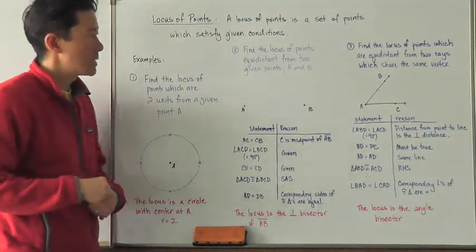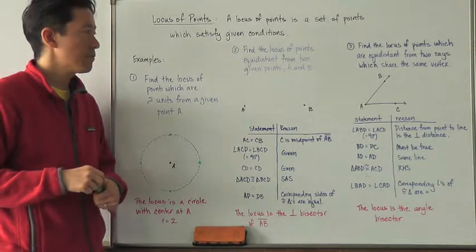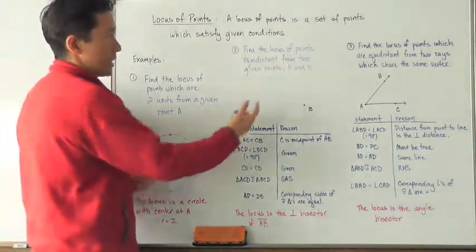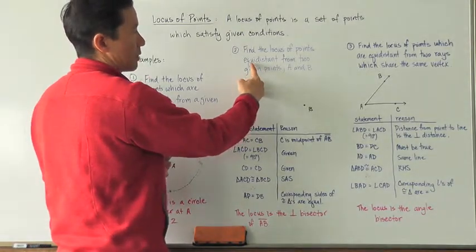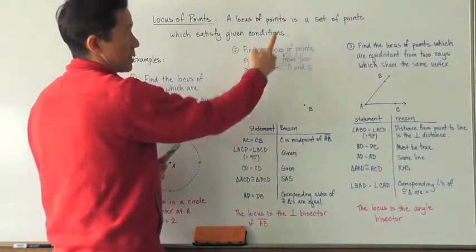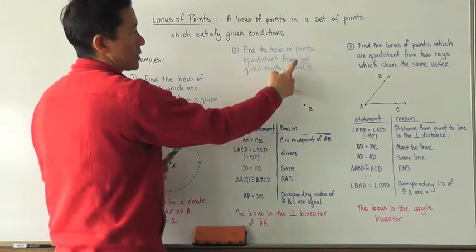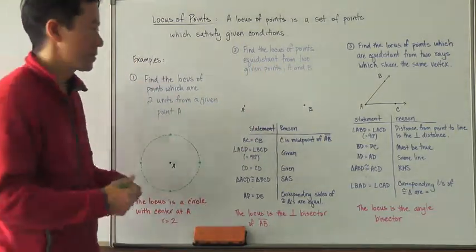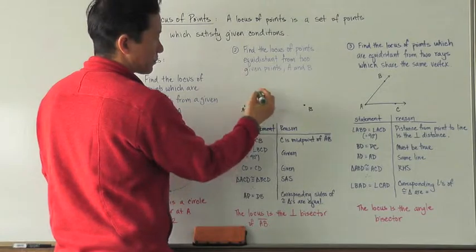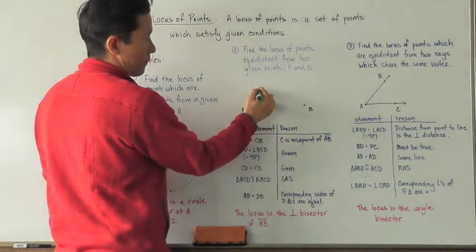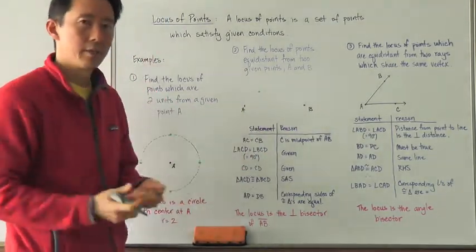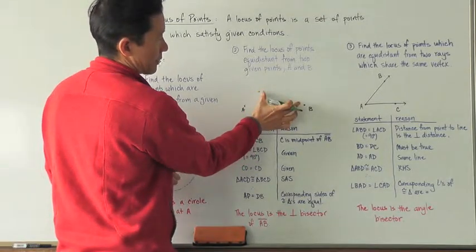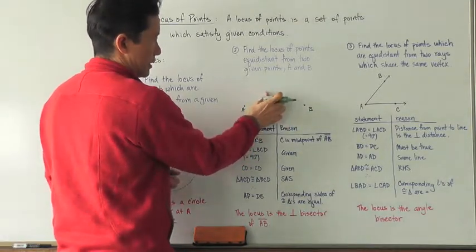Let's take a look at another example. Number two says: find the locus of points equidistant from two given points A and B. The condition is that the points we include in the locus must be equidistant from two given points A and B. Here we have A and B. Could it be that point? Well, of course not, because if I draw a line there, that distance is not equal to that distance.